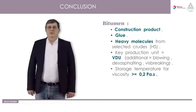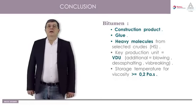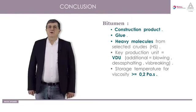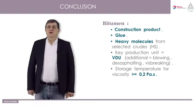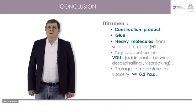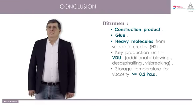Remember bitumen key points. It's a construction product. It's a glue of heavy molecules from selected high sulfur crude. Bitumen key production unit is vacuum distillation unit. Additional units can be blowing units, desasphalting units, and vis-breaking. Bitumen has to be stored at high temperature allowing it to be under 0.2 Pascal seconds. Thank you for your attention.